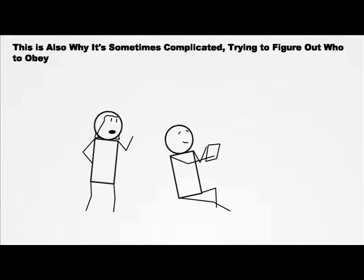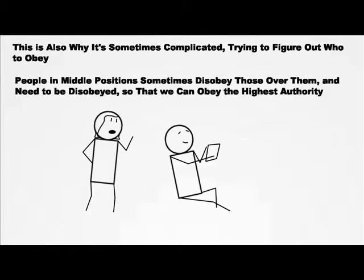This kind of disobedience is also the reason why it sometimes gets complicated trying to figure out who to obey. People in middle positions sometimes disobey those over them, and need in turn to be disobeyed so that we can obey the highest authority.